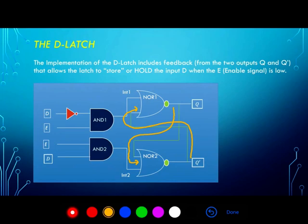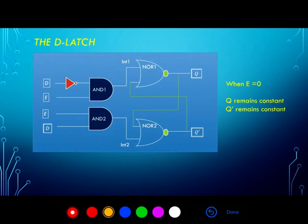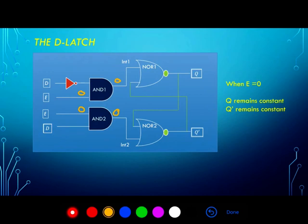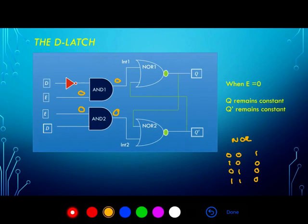Let's look at how this latch works. When E is equal to 0, that makes one of the inputs to each AND gate 0. By definition, an AND gate produces a 1 at the output only when both inputs are 1, so the output of both AND gates must be 0. When one input to a NOR gate is 0, the output of the NOR gate is exclusively determined by the other input — the NOR function produces 1 only when both inputs are 0, and 0 otherwise. So when one input is 0, the output is just the inverse of the remaining input.